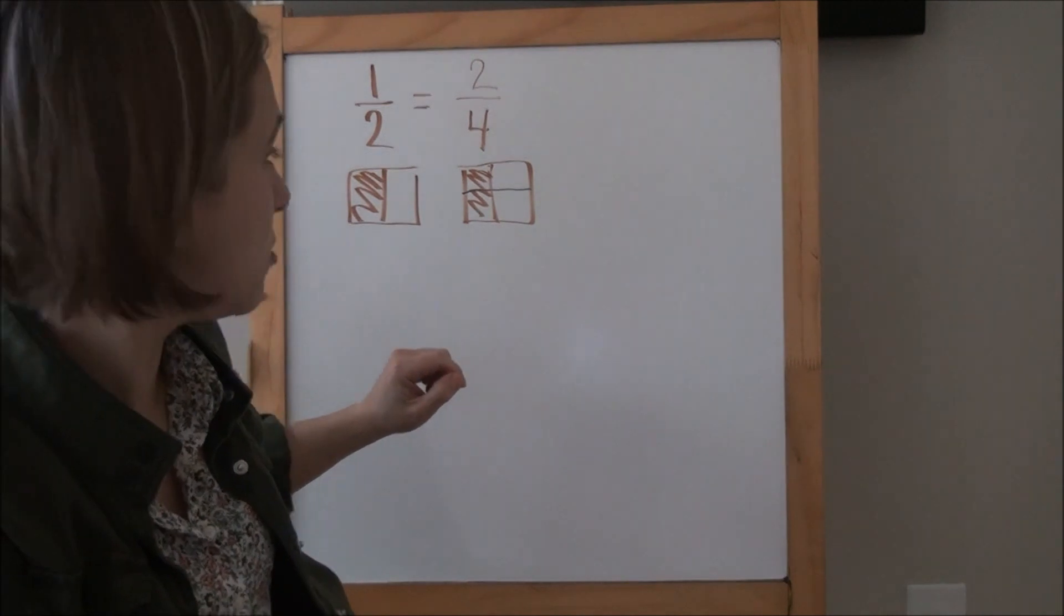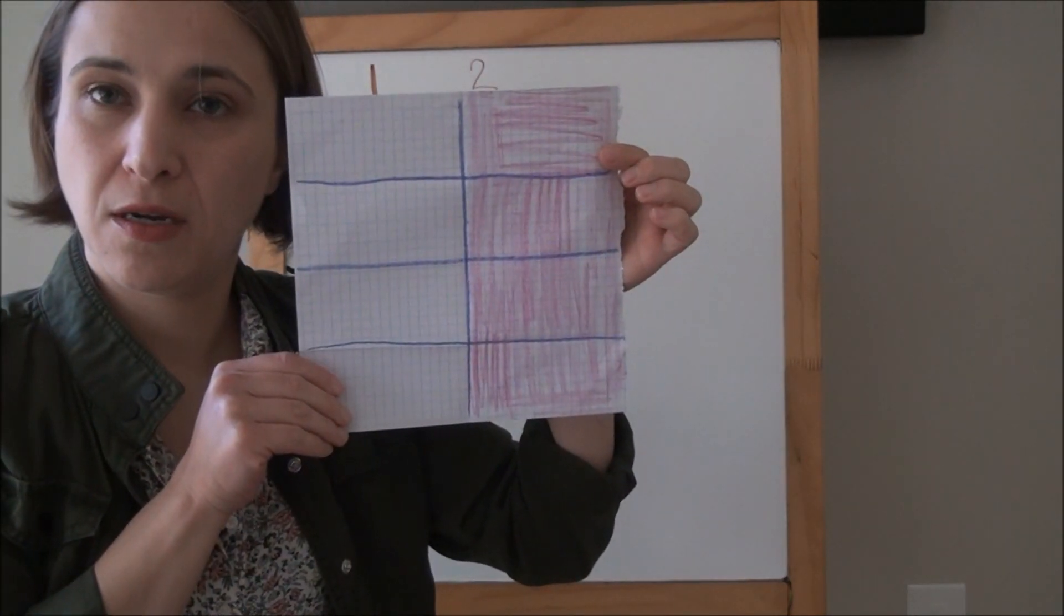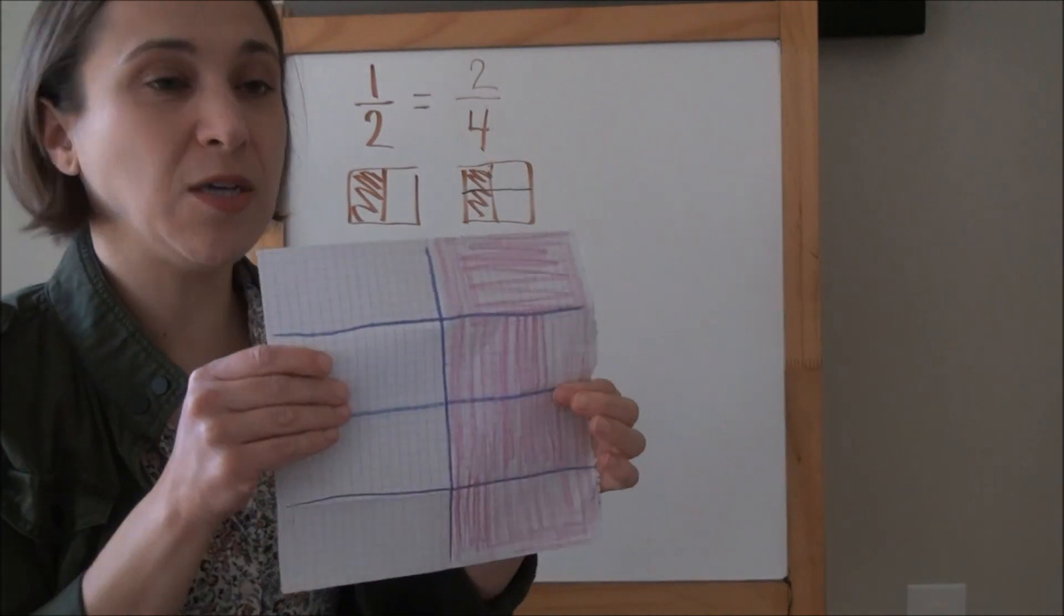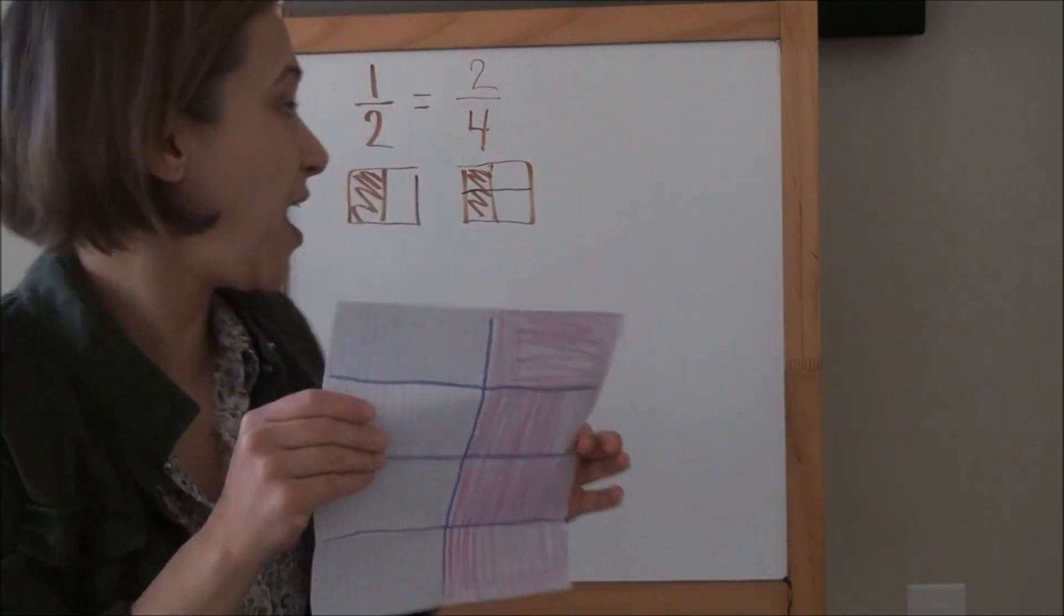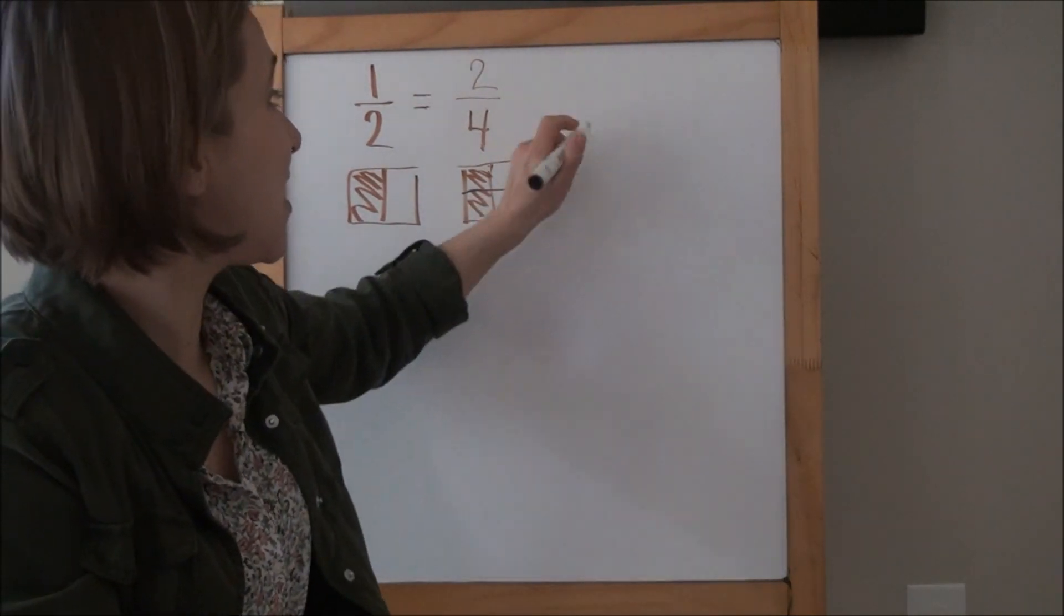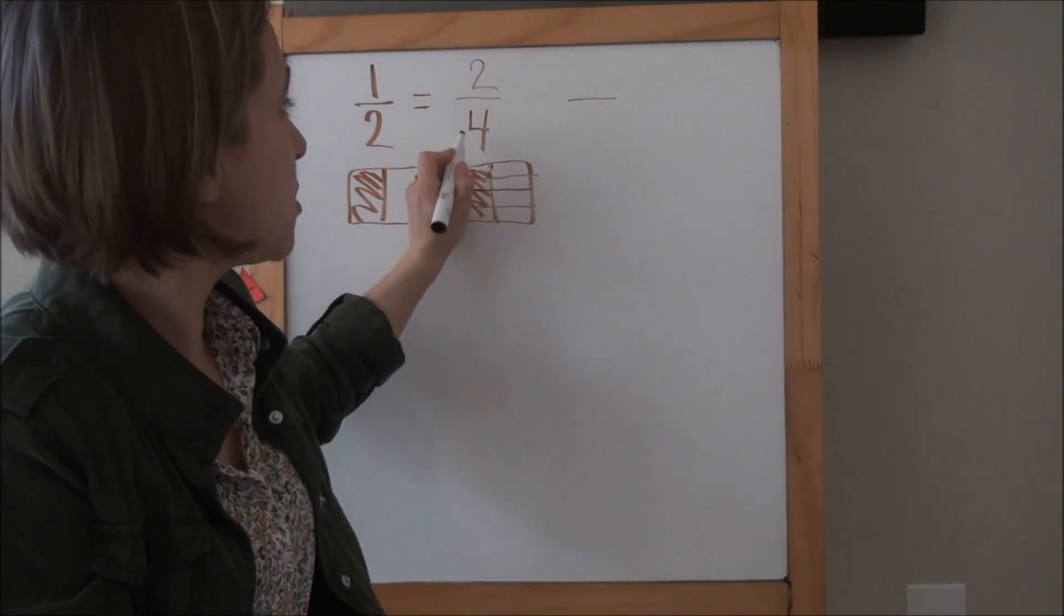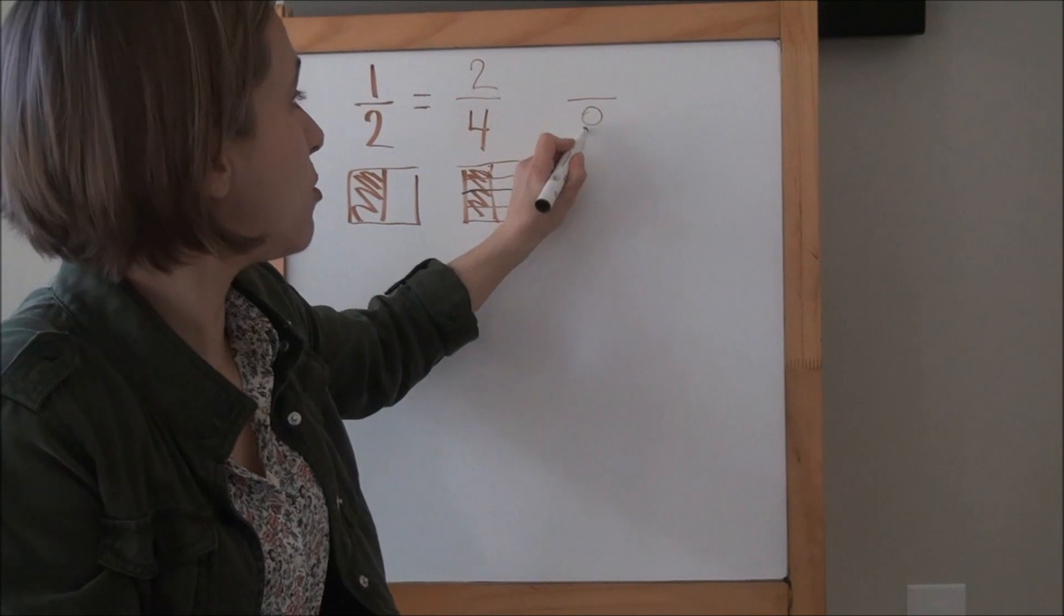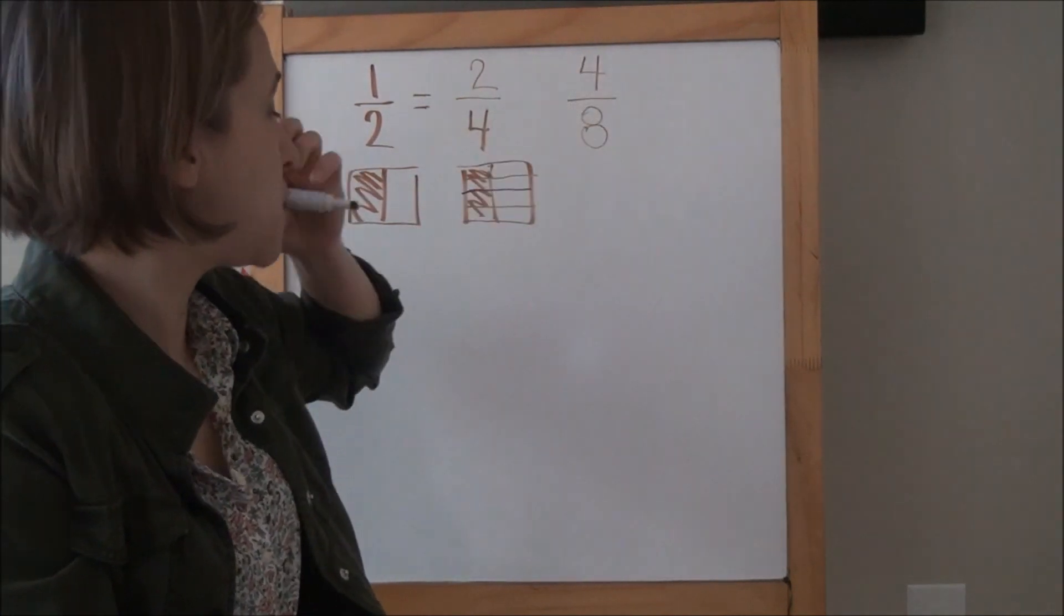I get why you said two-fourths before, because we ended up doubling the parts when we made that extra fold. So what happened here? Oh, so we made the extra fold. When we folded it in half yet again, it ended up doubling the total number of parts again. So that extra fold caused us to double the total number of parts, and that caused us to double the parts that were shaded.